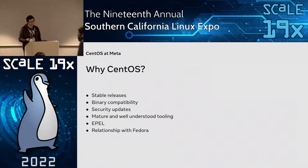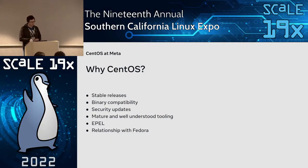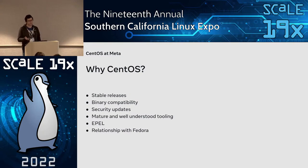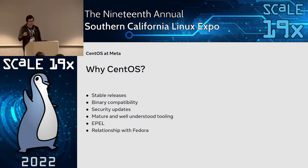Before we talk about how we use CentOS, I want to spend a few moments talking about why we use CentOS. CentOS has a lot of very desirable properties for a production environment. First of all, CentOS gives you stable releases, and stable releases are excellent checkpoints — you can use them as synchronization points in time whenever you want to apply other changes.